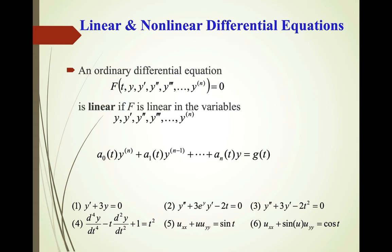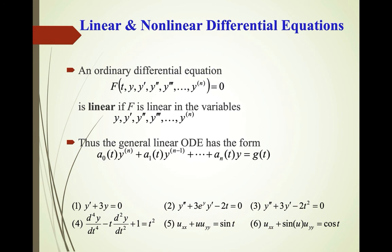If the equation is linear, it must be linear in all of the derivatives. A general linear ODE can be expressed with coefficients A₀, A₁, up to Aₙ, which are constants or functions of the independent variable, multiplied by the corresponding derivatives of Y. On the right-hand side, you have any function of the independent variable T.